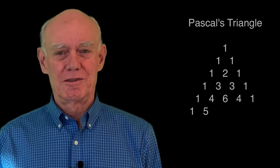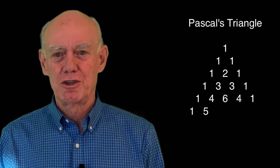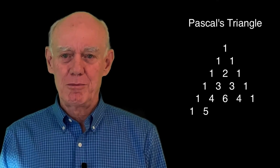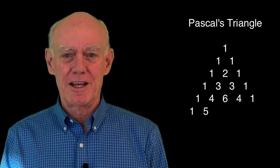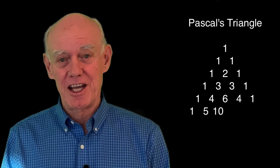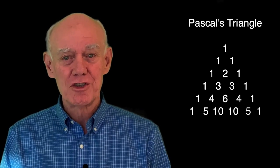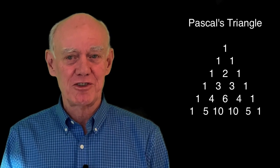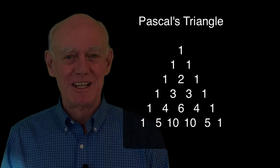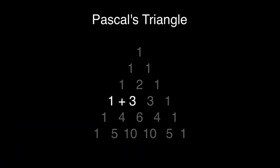We left off the last video with Pascal's triangle, trying to extend the pattern of numbers to include the next row. The first number is 1, then 5, then 10, then 10, then 5, and finally 1. Did you discover the secret to the pattern? Each row starts with a 1, and then you add the two numbers above to get the next number.